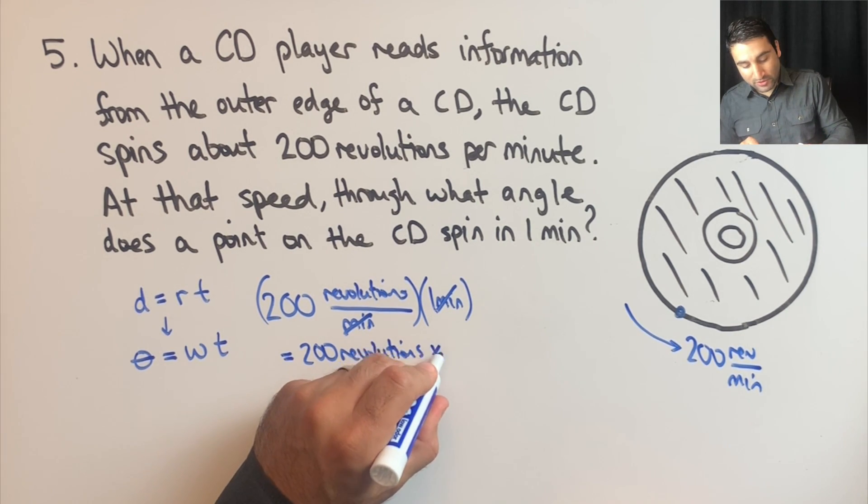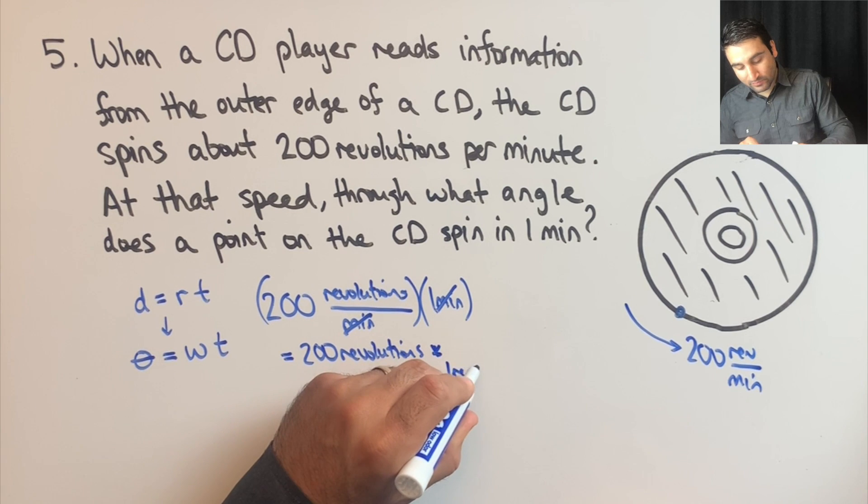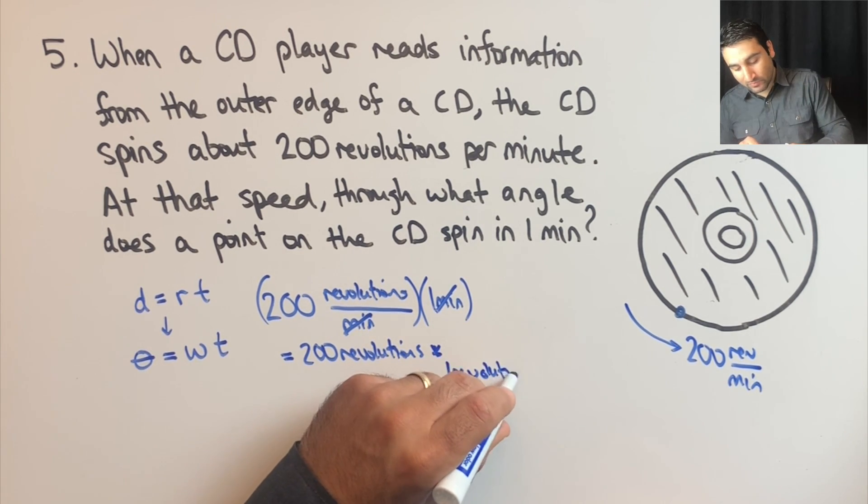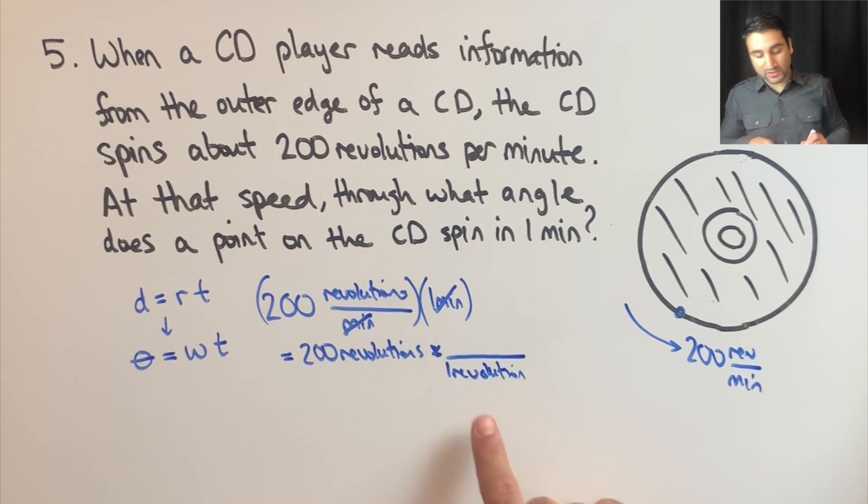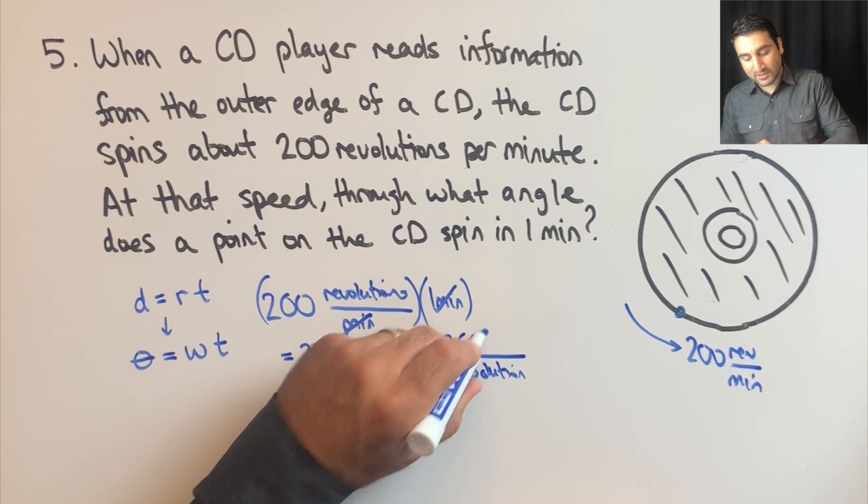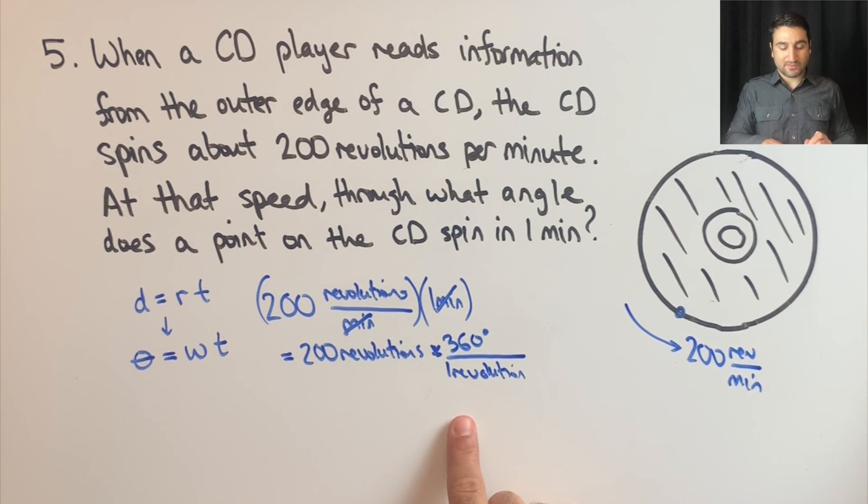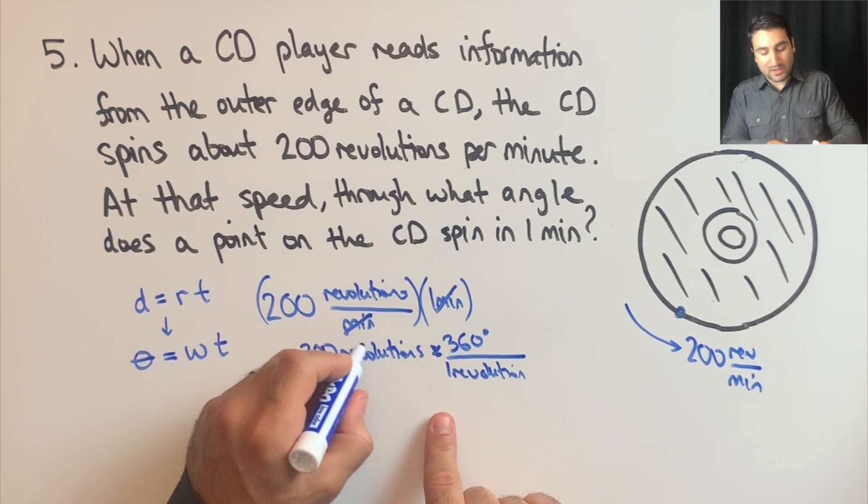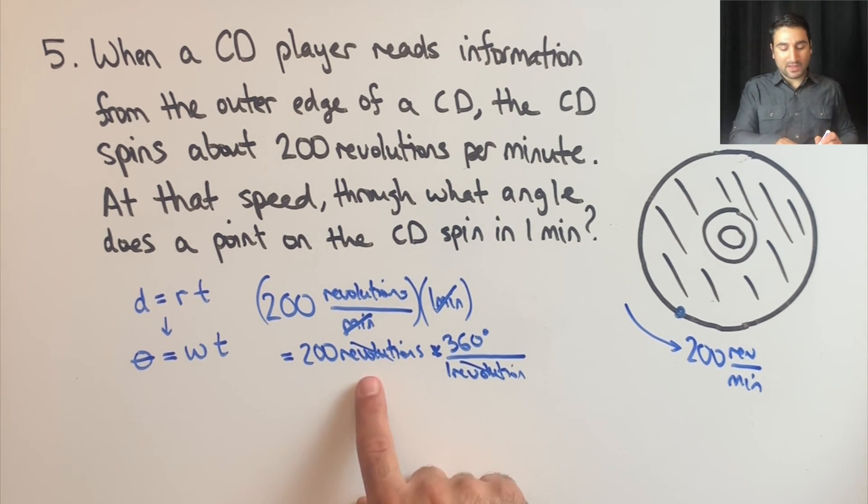one revolution is equivalent to 360 degrees. So if we cancel these out, you'll be left with 200 times 360 degrees,